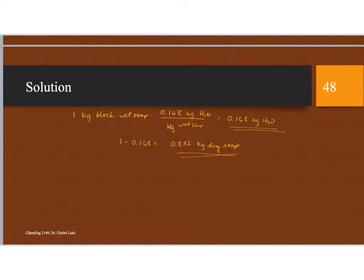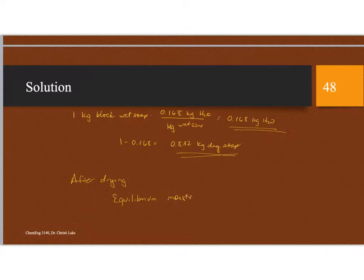The next question is asking how much water is going to be in there after drying. After drying, we're going to assume that this goes to the equilibrium moisture content. To figure out the equilibrium moisture content, we're going to need the help of one of those graphs that we were looking at in class earlier. In this particular case, we need one that's going to have soap.